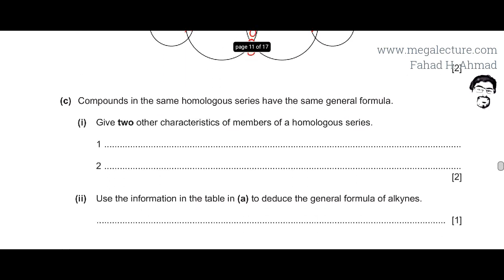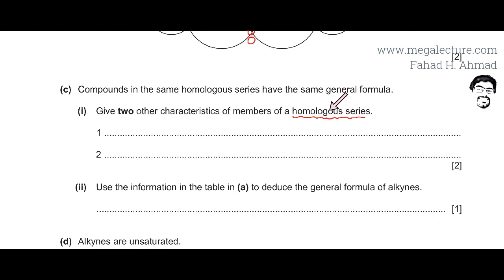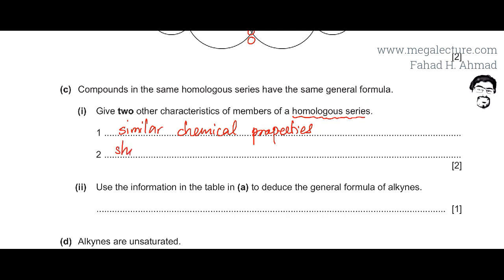Moving to the next part: compounds in the same homologous series have the same general formula. Give two other characteristics of members of a homologous series. A homologous series is a family of organic compounds — there are billions of different organic compounds found in animals, plants, and fossil fuels. You classify them into different families based on certain properties. One characteristic is that they have similar chemical properties, and another is that they show a trend in physical properties.